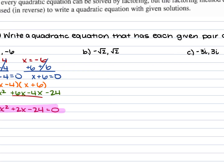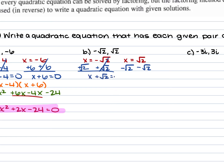For example 1b, we're given negative square root of 2 and positive square root of 2. We set both equal to x and move them over — adding the square root of 2 to both sides for one, and subtracting the square root of 2 for the other. We get x plus √2 equals 0, as well as x minus √2 equals 0.